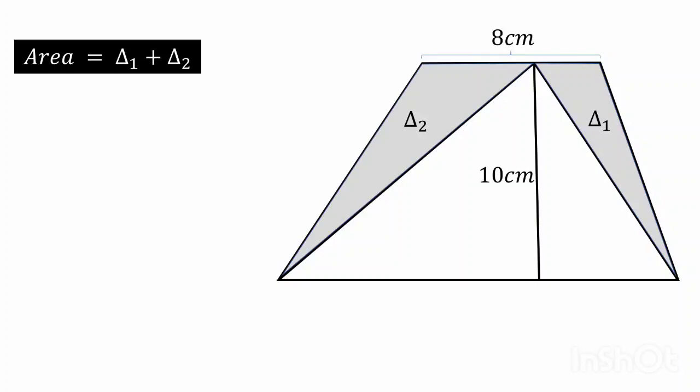Now del 1 is the area of the right side shaded triangle. So how can we find this area? Let the base of this triangle is a and the height is 10.